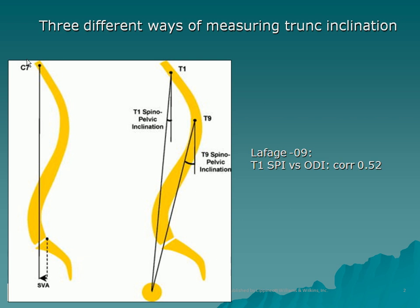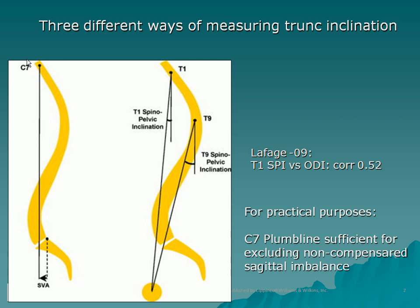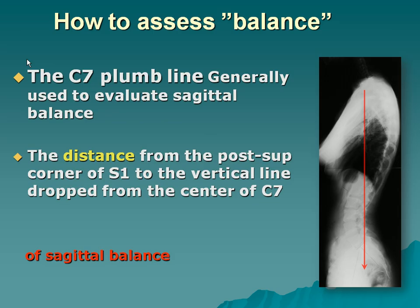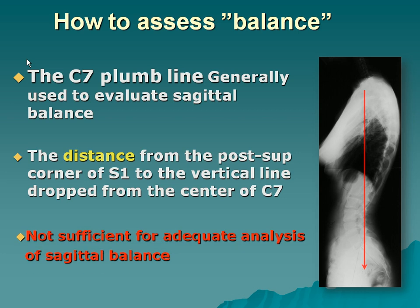Sagittal balance can be measured in several ways. To the left you have the C7 plumb line, which is the most common and, I think, the best one — it's very easy. Or you can use the T1 spinopelvic inclination, which is theoretically a little better, but in fact it does not correlate better to the ODI than the C7 plumb line at 0.52. So from a practical standpoint, the C7 plumb line works perfectly well. It is defined as balanced when it falls less than five centimeters in front of the posterior corner of S1 — though I will show that this is not sufficient for an adequate analysis of sagittal balance.